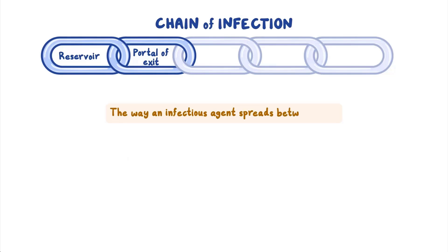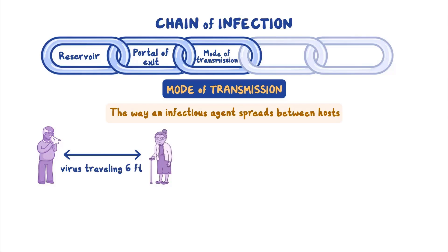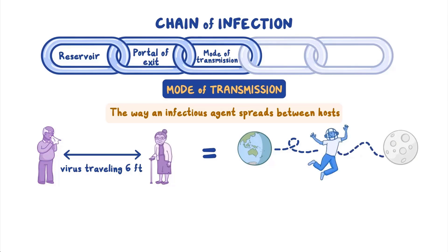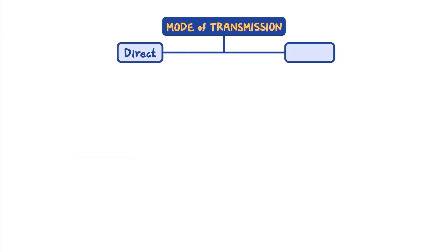The way an infectious agent spreads between hosts is referred to as its mode of transmission, and a given agent may use more than one mode of transmission. Relative to the microscopic size of an infectious agent like the flu virus, modes of transmission can involve incredible distances, and very few individual microbes successfully complete the trip to a new host. A virus traveling six feet is roughly equivalent to a six-foot-tall human traveling halfway from the Earth to the Moon on a human scale. Often, humans make the trip easier for infectious agents when they spend time close together and when they don't cover their portals of exit or practice good hygiene. There are two main categories of mode of transmission: direct and indirect.